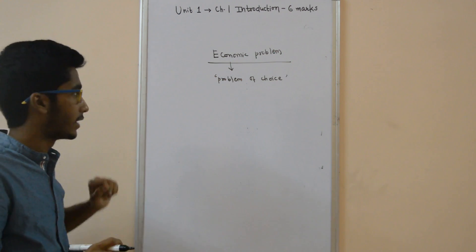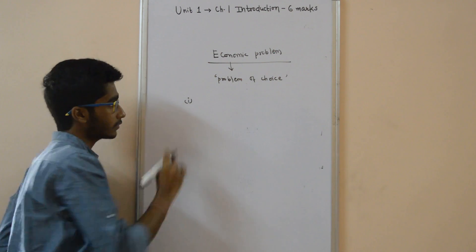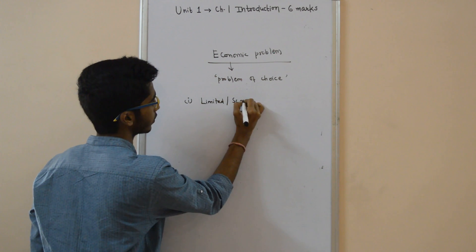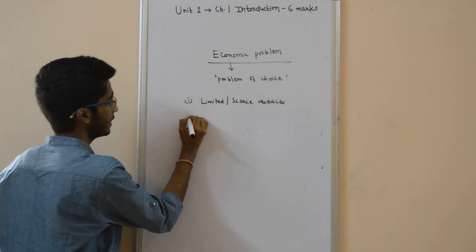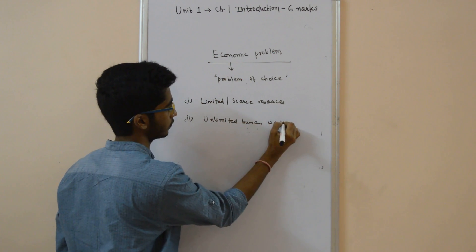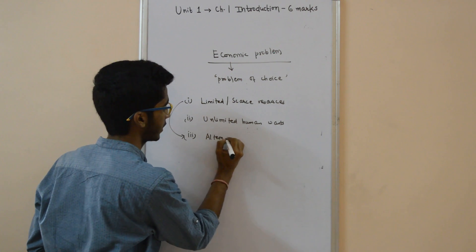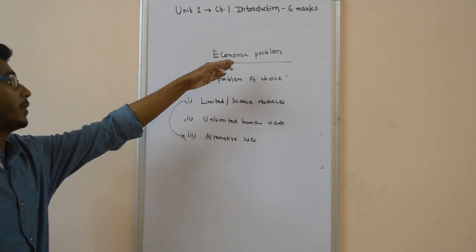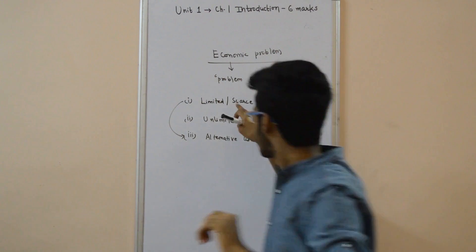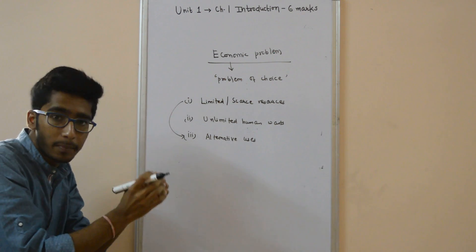We have 3 points to explain whenever we explain the economic problem — why it arises. First: we have limited or scarce resources. Second: human wants are unlimited. Third: resources have alternative uses. These are the 3 reasons why the economic problem arises — limited resources, unlimited human wants, and alternative uses of resources.